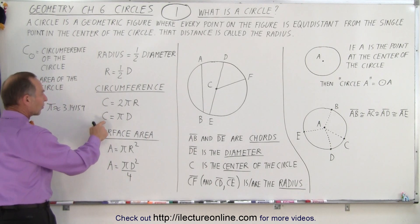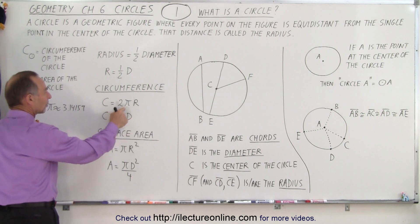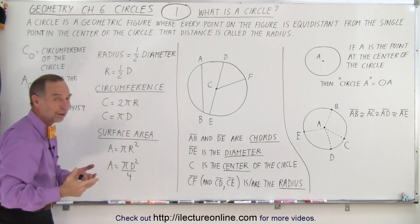We can also say that the circumference is π times the diameter, since the diameter is twice the radius. These are equivalent equations.